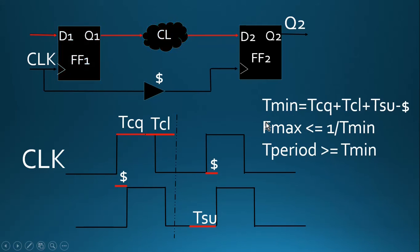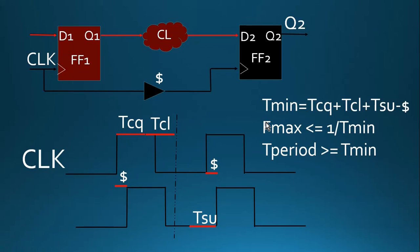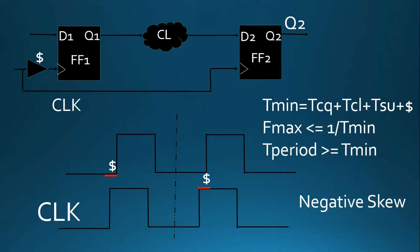Since T_min is reduced, F_max will increase. So the maximum operating frequency increases by adding positive skew in the design. Now let us examine the second case — negative skew. For negative skew, the delay δ is added to flip-flop 1 (the throwing flop), so it gets the delayed version of the clock, while this clock goes to flip-flop 2 directly.